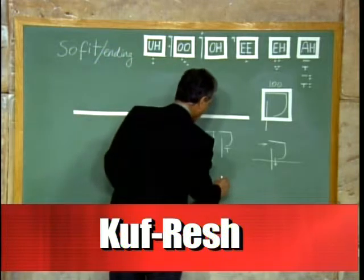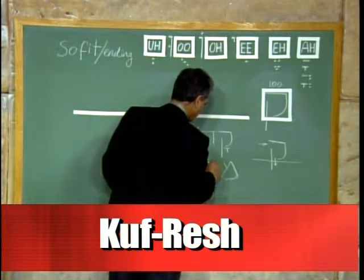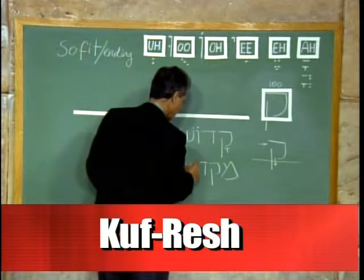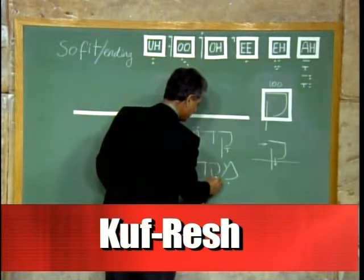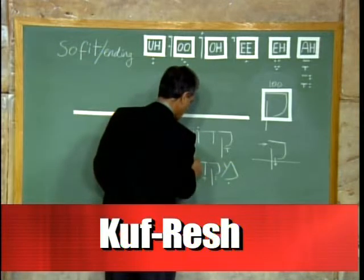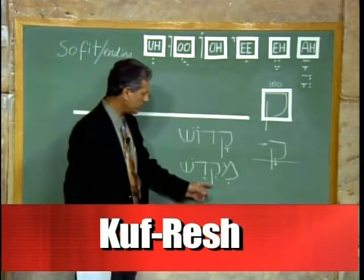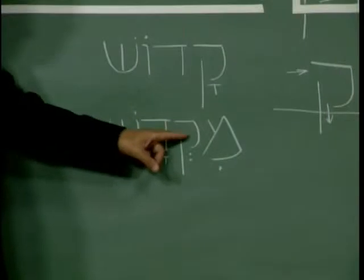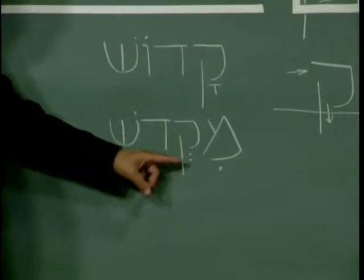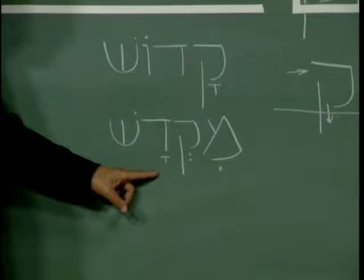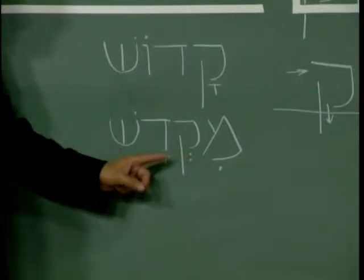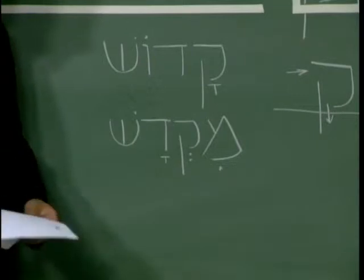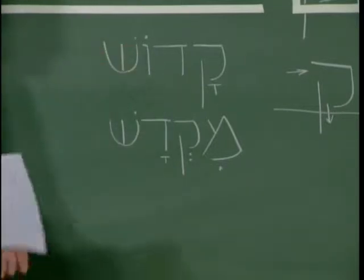So we have the following word: Mem, Kuf, Dalet, Shin. Here is the letter Mem with an E sound — Mi. Then a Kuf with an A sound — Ka. Then a Dalet with an A sound — Da. And the letter Shin — Sh. Mik-dash. Mikdash is the temple, the holy temple. So that's a derivation of Kadosh which is holy. Kodesh is holiness.